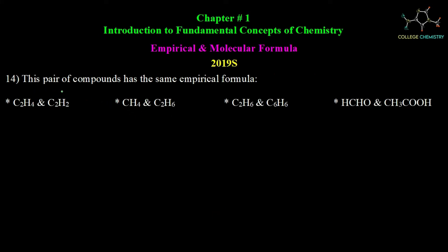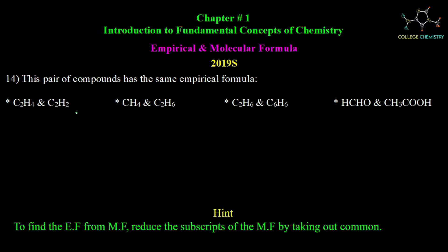Question number 14: This pair of compounds has the same empirical formula. Molecular formulas are given. For C2H4, dividing by the common factor 2 gives the empirical formula CH2. For C2H2, dividing by 2 gives the empirical formula CH. So the empirical formulas are different.